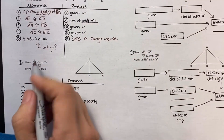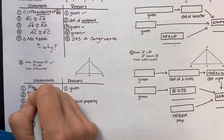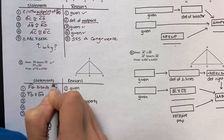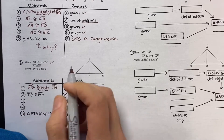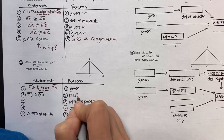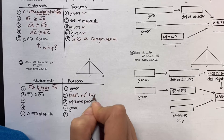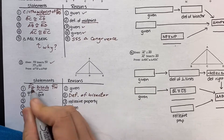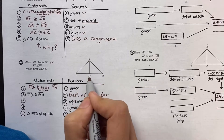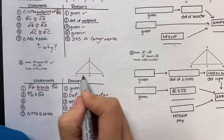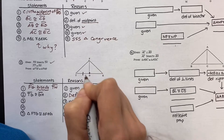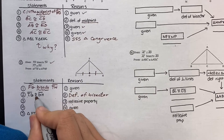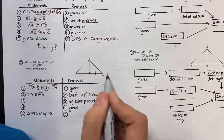Let's do another one. FG bisects TH. Anytime you get a special vocab word, you need to address it — the definition of bisector. So if FG, this line, really does cut this line in half, then the left side is equal to the right side. TG is congruent to GH.